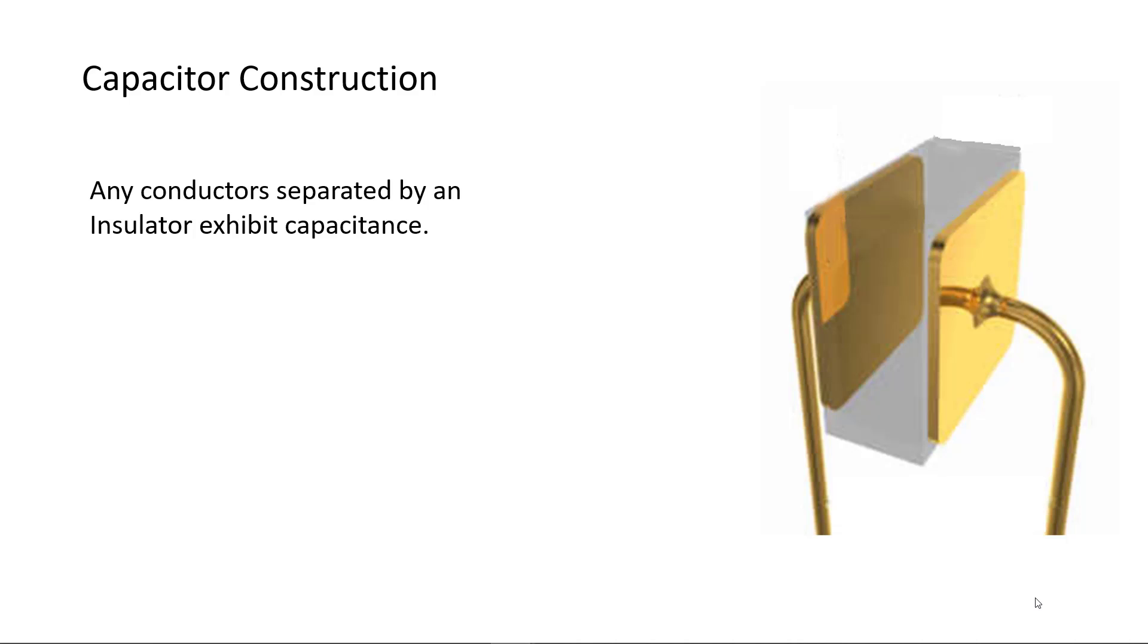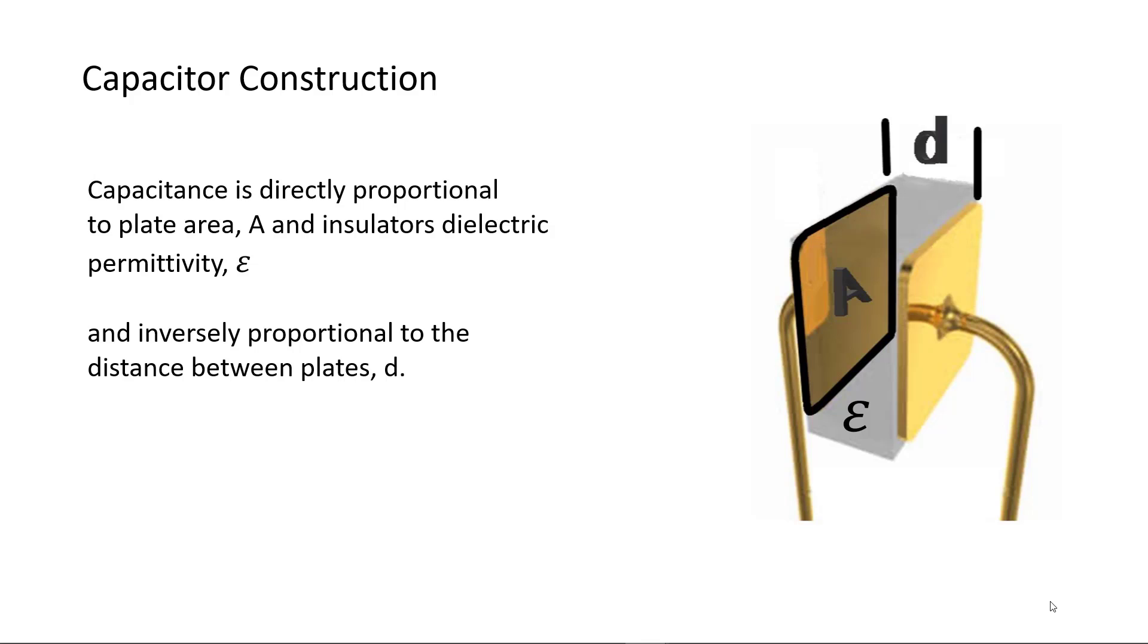Conductors separated by an insulator will exhibit capacitance. Capacitors are made by separating two conductive plates by a dielectric insulator. Capacitance is directly proportional to plate area A and permittivity epsilon, a measure of how easily the dielectric permits the electric force field to flow through it. Capacitance is inversely proportional to the distance between plates.